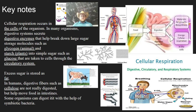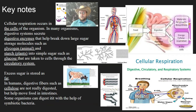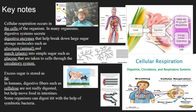Cell respiration wouldn't be possible in organisms such as animals without the help of many systems. The respiratory system provides the cells of the body with oxygen — picking it up from the air and delivering it to the circulatory system, which then takes the oxygen to every cell in the body to give to the mitochondria. Meanwhile, the digestive system breaks down food with the help of digestive enzymes into tiny little packets that can be carried in the blood to every single cell, where cell respiration actually happens.